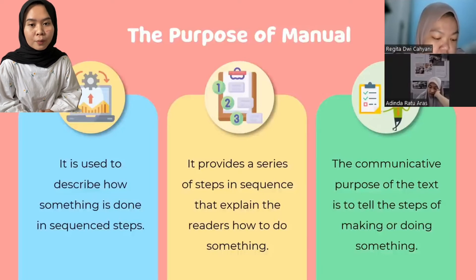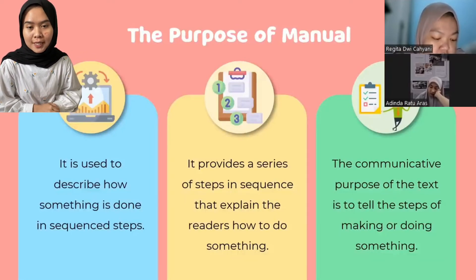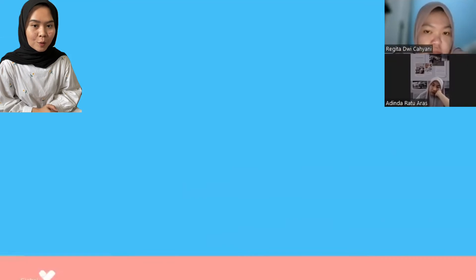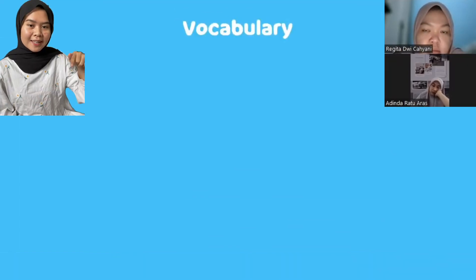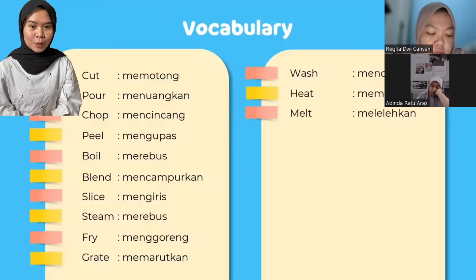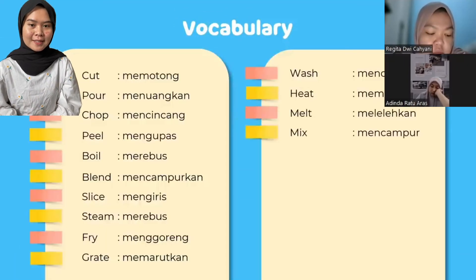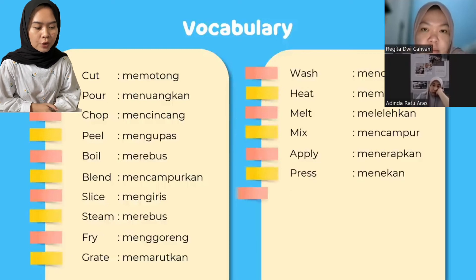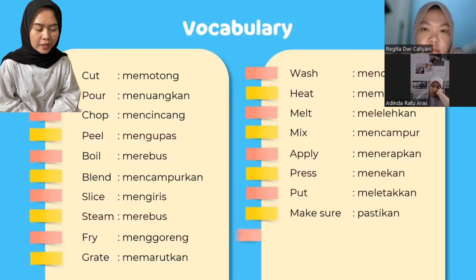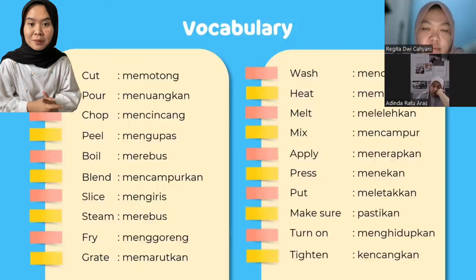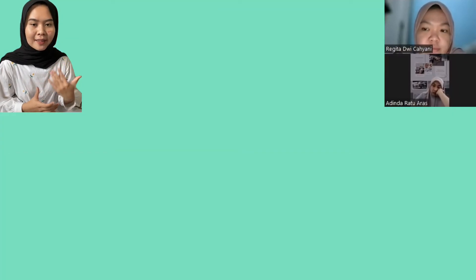Tujuan teks procedure manual adalah untuk mendeskripsikan langkah-langkah dan untuk melakukan sesuatu secara berurutan. Dan ini kata-kata yang sering digunakan dalam procedure text yaitu: cut, pour, chop, peel, boil, blend, slice, trim, dan yang lainnya yang bisa kalian lihat di sini. Yaitu itu untuk materi hari ini.